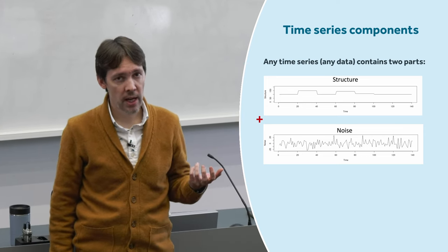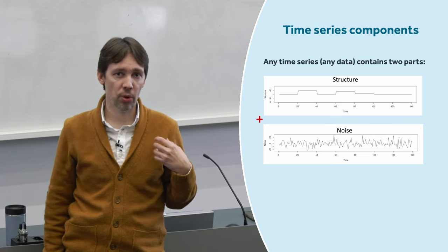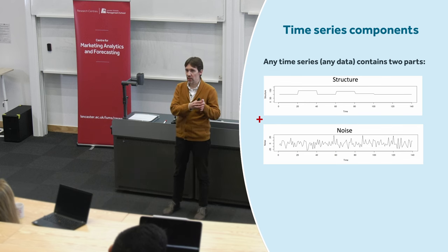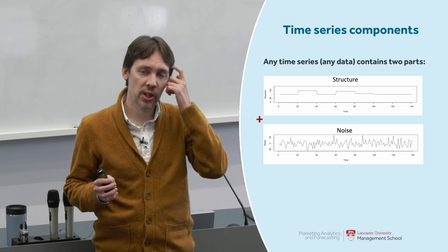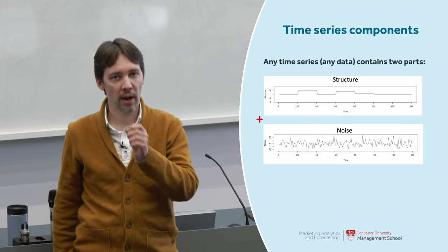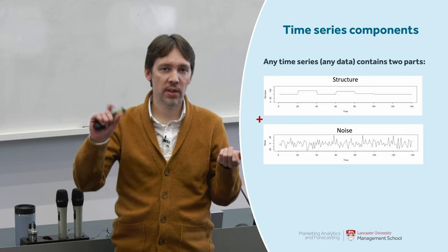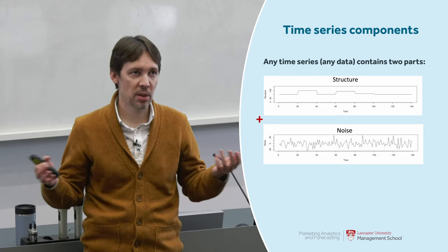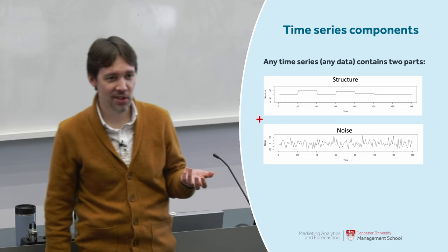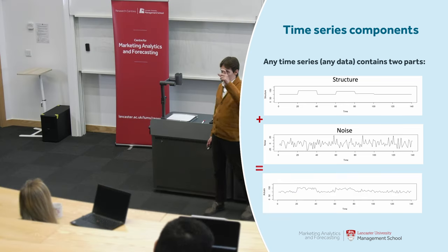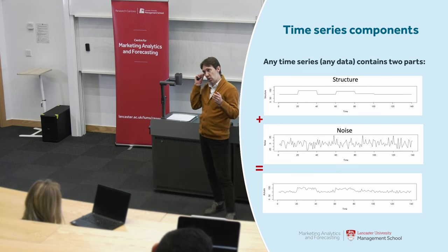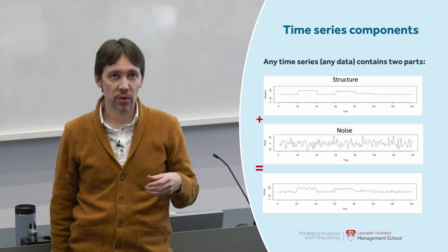Noise is something that we cannot predict — it is outside of our control. For example, if we work for an ice cream shop, they can say to some extent when sales tend to increase or decrease, but they won't be able to tell you that on Monday we will have exactly 150 units. Why? Because there is some randomness, some noise — some people go for ice cream on Monday and some don't. When we have these two elements of structure and unite them, we get our time series.